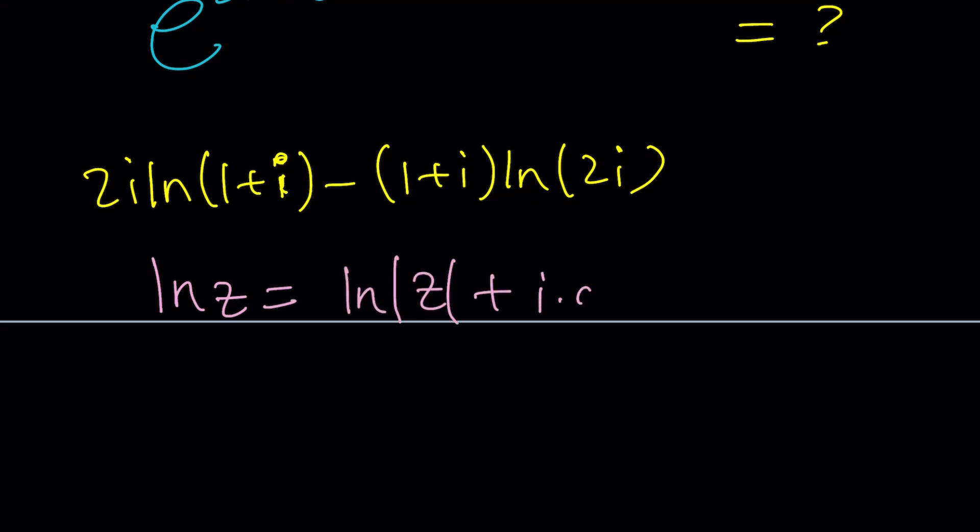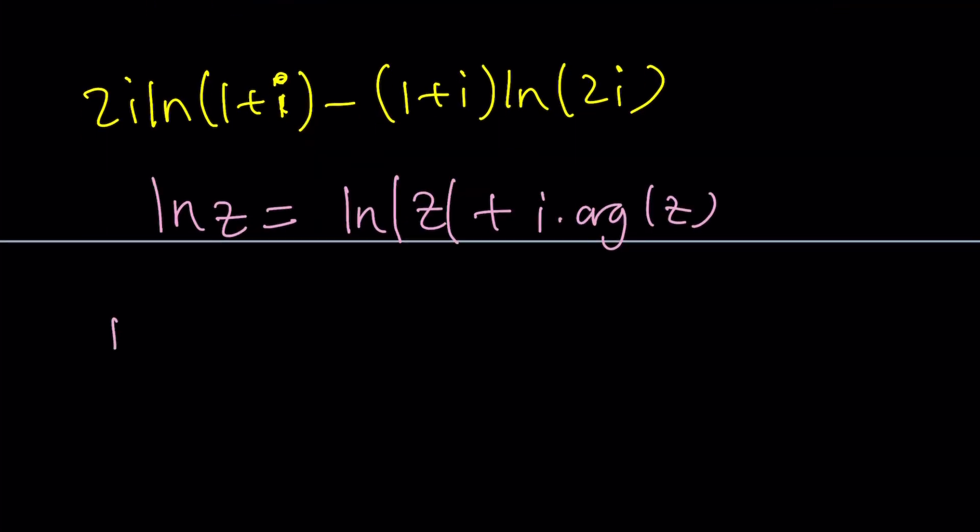The definition for the natural log of a complex number z is ln z equals ln absolute value of z plus i times the argument of z. In other words, if z can be written as r e to the i theta, thanks to Euler, then ln z is just going to be ln r plus i times theta. Of course, I'm talking about the principal values here,